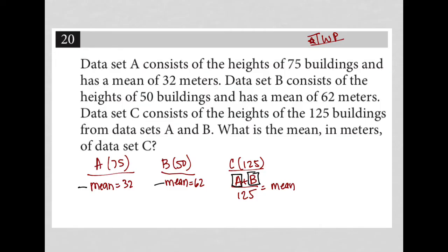Because the way we find the mean of a data set is by adding all of the data points together, which in this case would be A plus B, and then dividing by the number of data points we have, which in this case is 125. So I can use this to figure out what A actually equals.